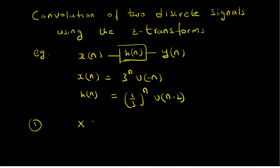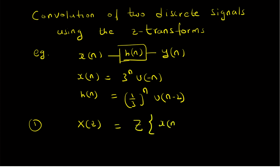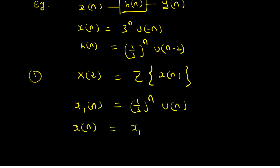The Z transform of X of n is X of Z. Since X of n is 3 power n times U of minus n, we define a new signal X1 of n as 1 by 3 power n times U of n, which is a causal signal. Then X of n equals the time-reversed version of X1 of n — that is, X of n is X1 of minus n. So it is a time reversal.